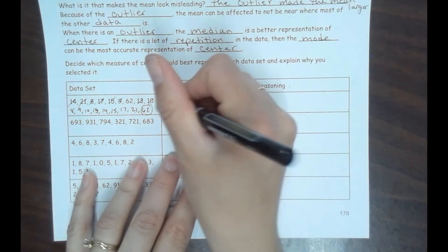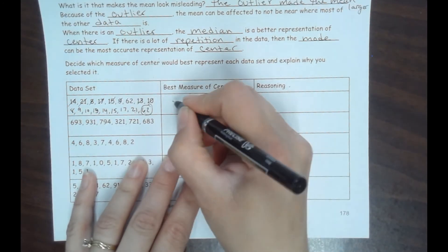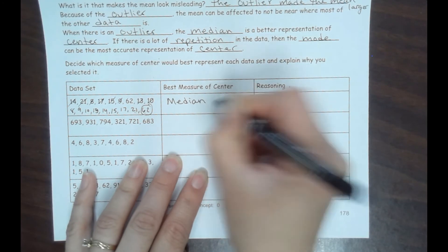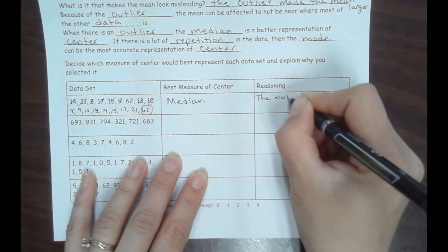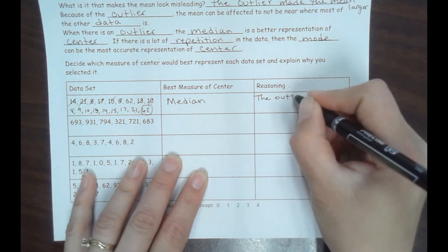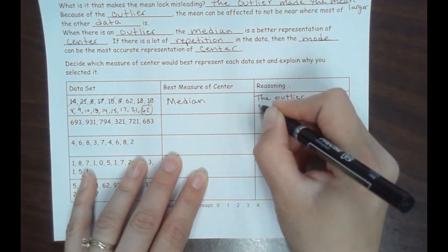So because of the outlier, I don't see any repetition in this one, so that tells me that the median would be best. Why? The outlier. Because it's a big outlier, the outlier would make the average, the mean, look much larger.